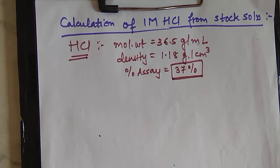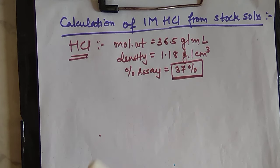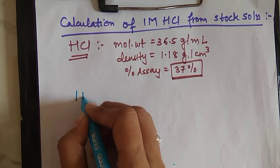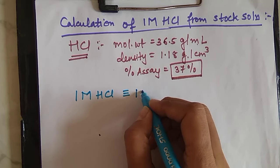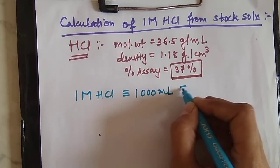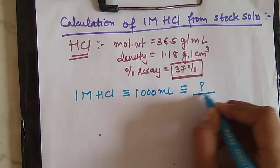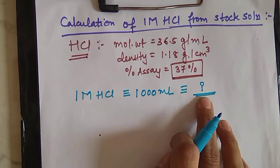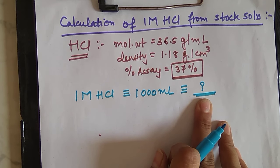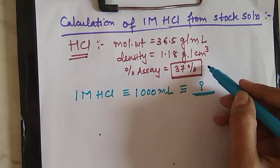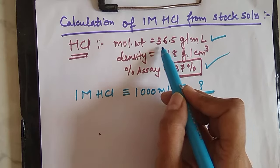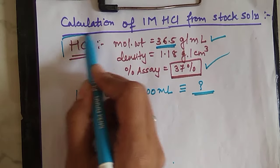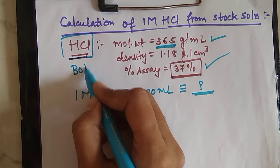Here we don't know the molarity of the HCl solution given, so first we need to calculate the molarity. We want to calculate 1 molar HCl for 1000 ml — how many grams of HCl need to be dissolved? But here we don't have the weight of HCl; it is in liquid form. So we have to first convert grams into volume, because the HCl given is itself in liquid form.